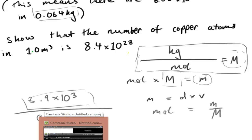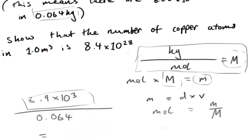So we've got a calculator here just to work this out. This would be 8.9 times 10 to the 3 divided by 0.064, that is equal to 139,062.5. So this is our number of moles.